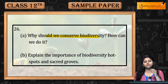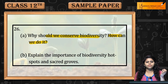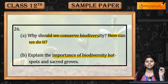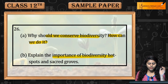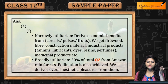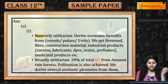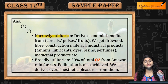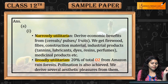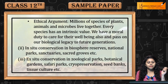Why should we conserve biodiversity? How can we do it? Explain the importance of biodiversity hotspots and sacred groves. Why should we conserve? There are three arguments: Narrow Utilitarian, Broadly Utilitarian, and Ethical Argument.